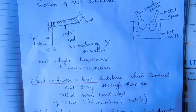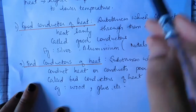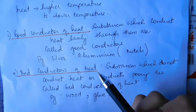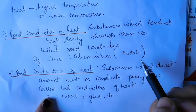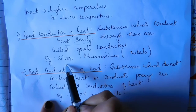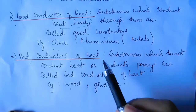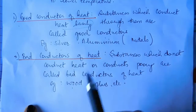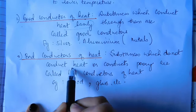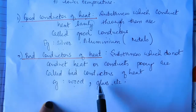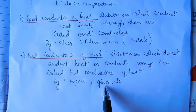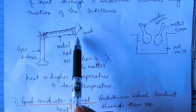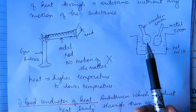So substances conduct heat with different ease, and we have two types of conductors. Good conductors of heat: substances which conduct heat easily through them are called good conductors — example: silver, aluminum, and all other metals. Silver is the best conductor. Bad conductors of heat: substances which do not conduct heat, or conduct poorly, are called bad conductors — also called insulators. Example: the wooden spoon. Another example of a bad conductor is glass — you can hold a glass rod in a flame for a very long time without feeling any hotness.